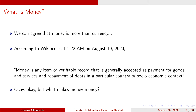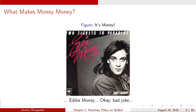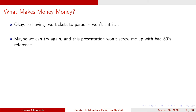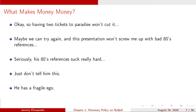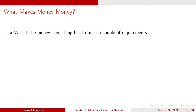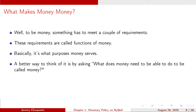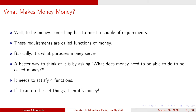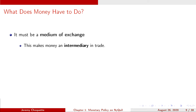Okay, great — but what does that actually mean? What makes money money? Money has to meet a couple of requirements in order to actually be called money. These are called the functions of money — basically, the purpose that money serves. A better way to think of it is simply asking: what does money need to be able to do to be called money? It's got to satisfy four functions. If it can do these four things, then it's money.